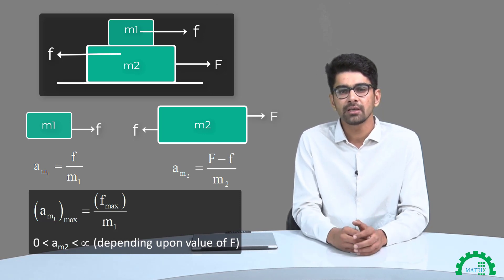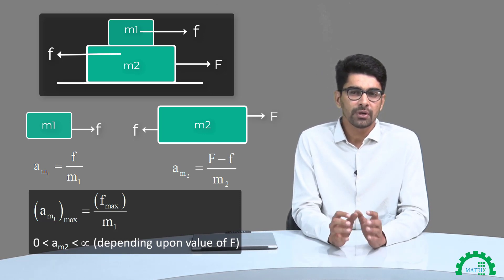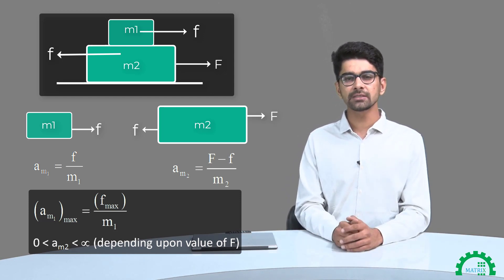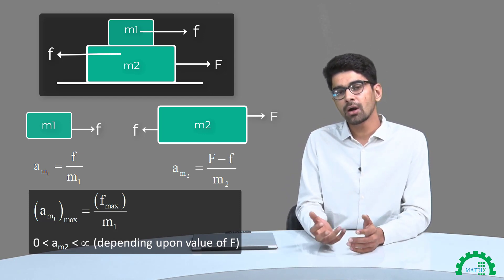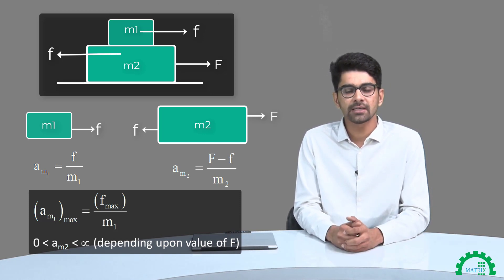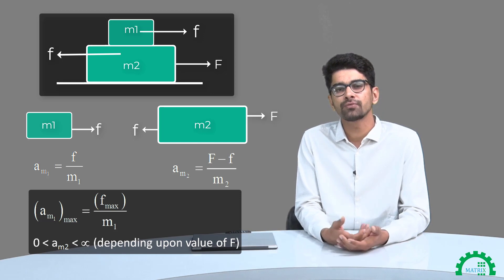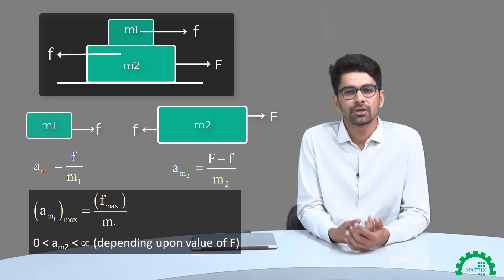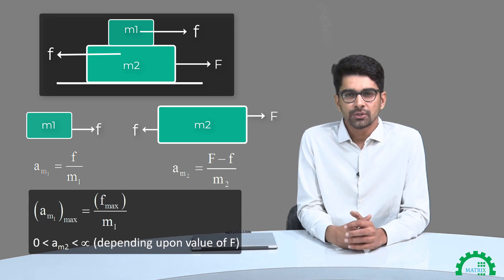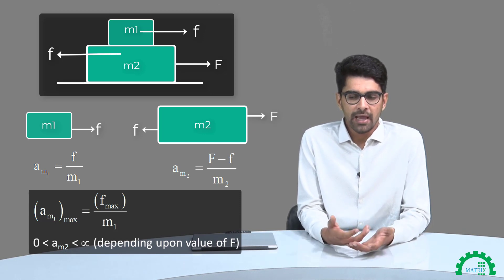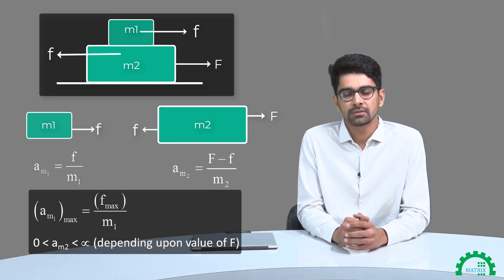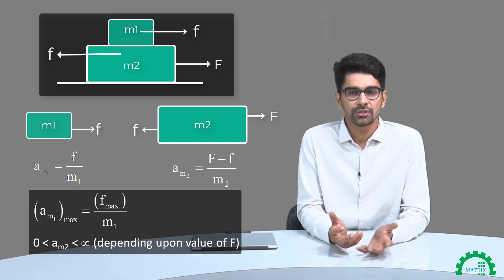But acceleration of M1 will increase only up to a certain limit, because on M1 we only have friction. So if our applied force increases beyond that value at which friction is putting its maximum effort, the acceleration of M2 will be greater than the acceleration of M1, and slipping will occur. If the force value is less than that particular value at which friction is at its maximum, then there's no slipping.